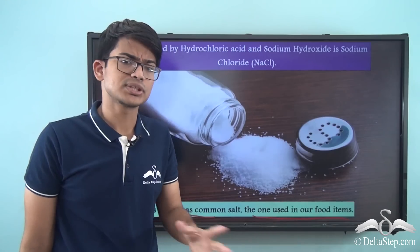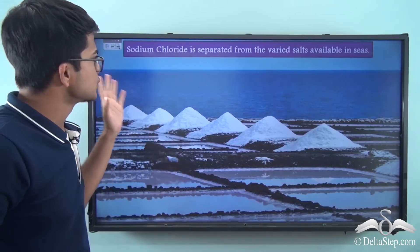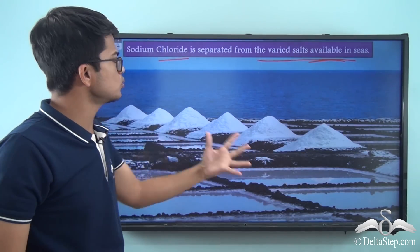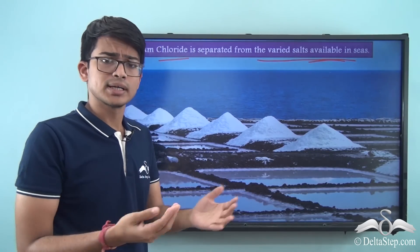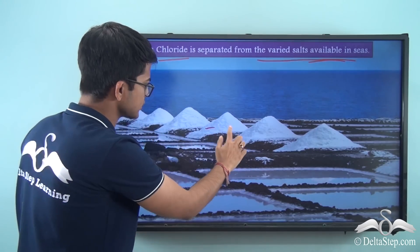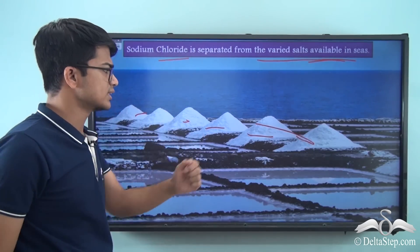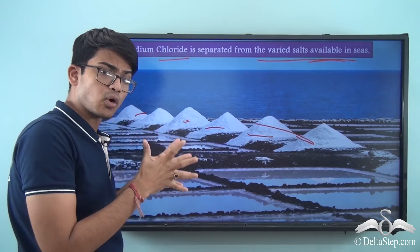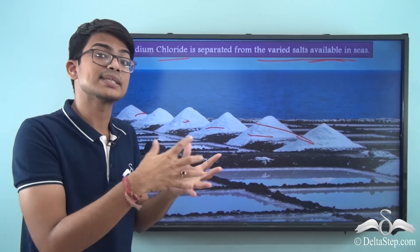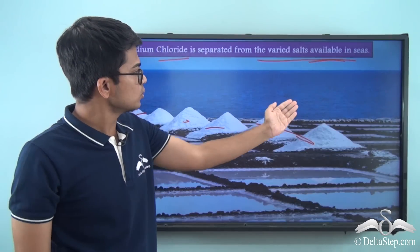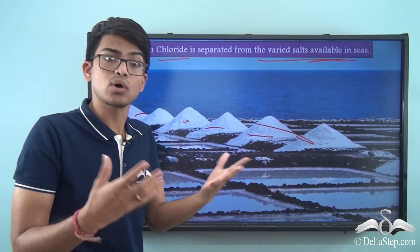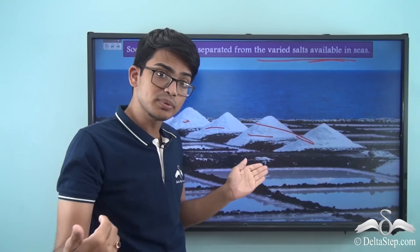Sodium chloride is actually separated from the varied salts available in seas. If you go to a coastline, you will see heaps of such salt. From that, sodium chloride - the edible salt we eat in our daily food - is separated out, because sea water is salty. There are different kinds of salt, but not all are edible, so sodium chloride has to be separated out.